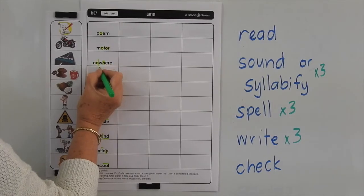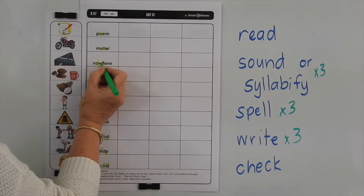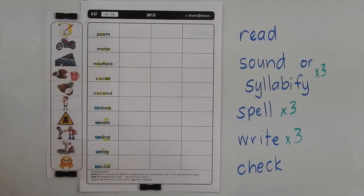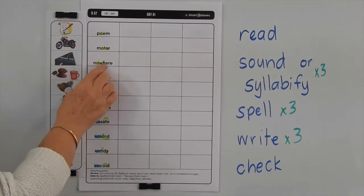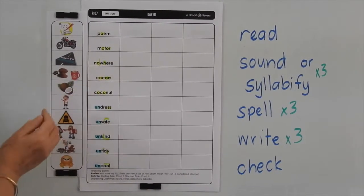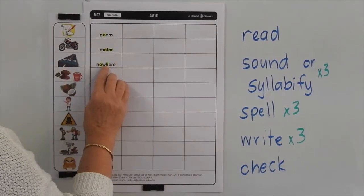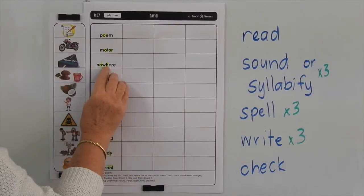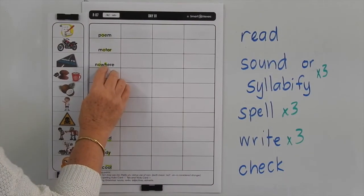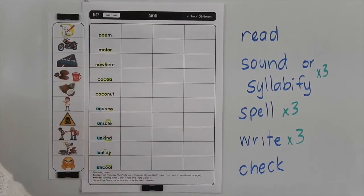Now, where — you can split that one there. Where, you can hear the H after the W. Where, you can feel the air so you know that there's an H there.